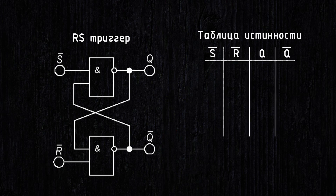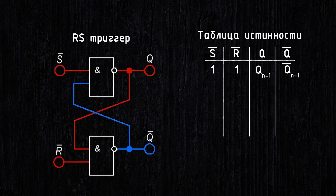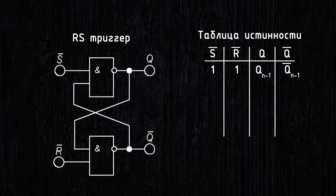Let's look at the truth table, which shows all possible states of this flip-flop. We apply a 1 to the inverse inputs S and R. This is the so-called storage mode of the flip-flop. I will use red to indicate a logical 1 and blue for a logical 0. Suppose there was a 1 at the Q output. It will go to the lower NAND gate, resulting in a 0 at its output, which will go to the input of the upper NAND gate, and its output will be a logical 1. In other words, the state does not change.